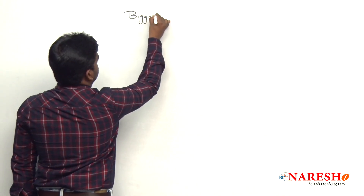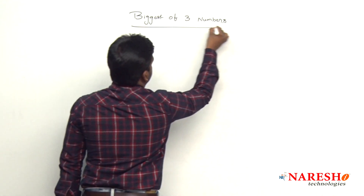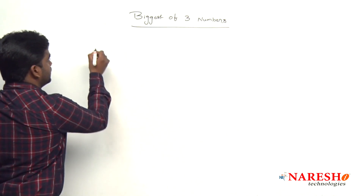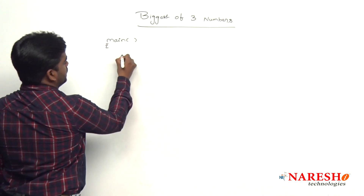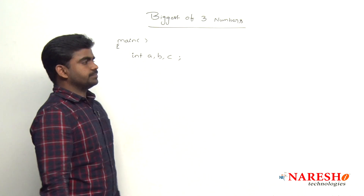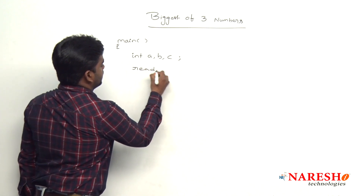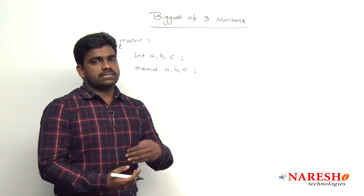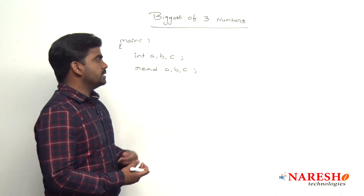The concept is biggest of three numbers. Execution starts with the main function. We need to declare three variables: a, b, and c. I am directly writing read a, b, c values — I am not using printf and scanf functions. You know how to read three integers into integer type variables.